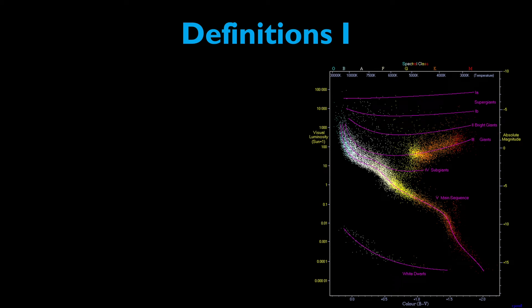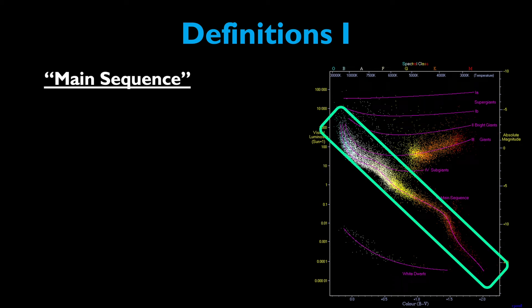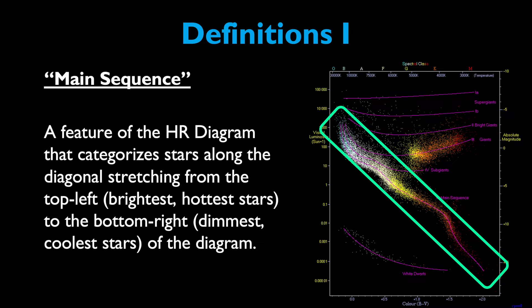First things first, let's review some definitions. The main sequence is a feature of the H-R diagram that runs diagonally across the diagram. The top left corner represents the hottest and brightest stars on the diagram, and the bottom right corner represents the coolest and dimmest ones.